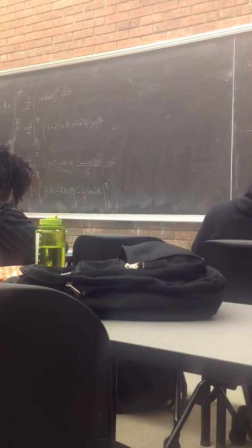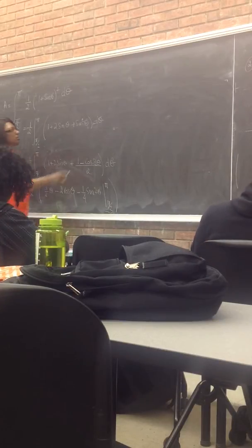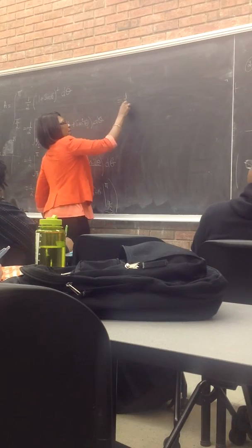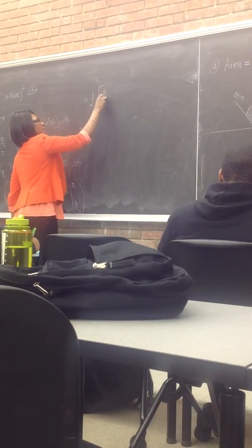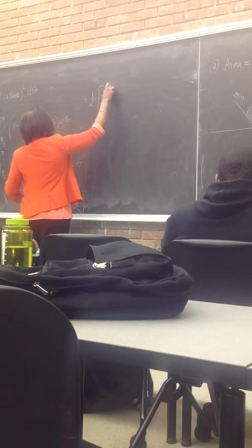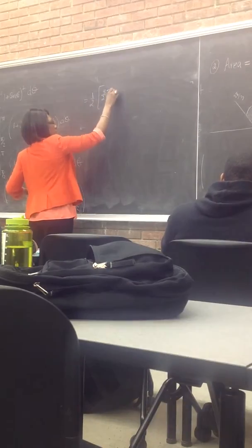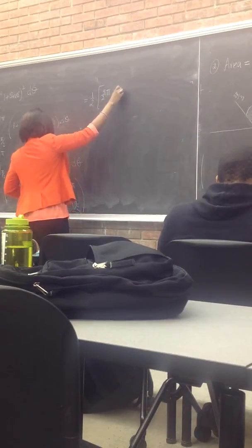And then we substitute π/2. So at π, I'll have 3 halves π. Cosine of π would be negative 1. So this is plus 2. And sine of 2π is 0.